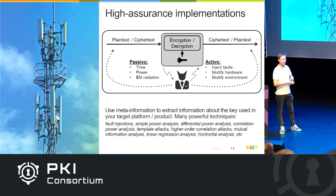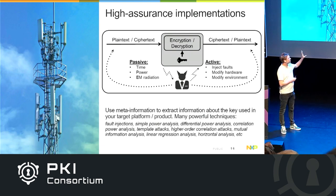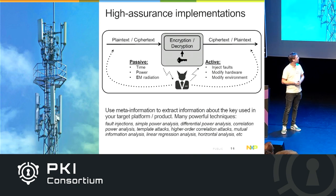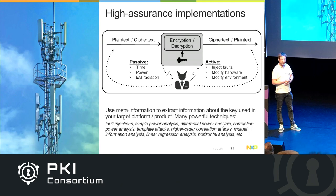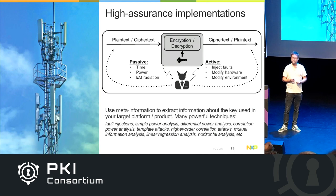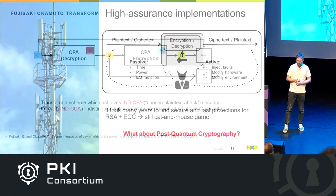If the chip is running crypto and you can measure meta-information — for instance the power consumption, timing, or electromagnetic radiation — you can use this to deduce information about the key. Done passively, this is called a side-channel attack. Done actively — for instance, shooting lasers at the chip to produce faulty output, from which you can deduce the secret key — that's called fault injection. This is a very active field of research, and it's well understood how to protect ECC and RSA. The big question is whether the same countermeasures apply to post-quantum crypto schemes.